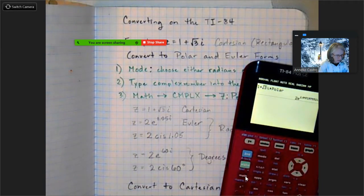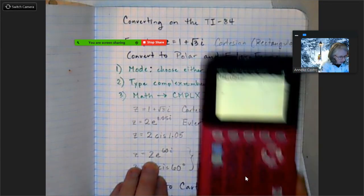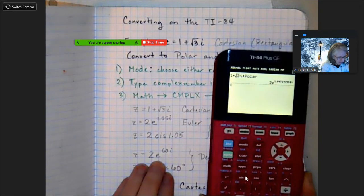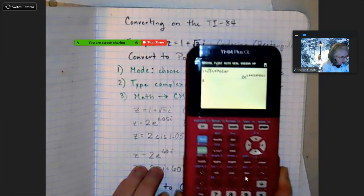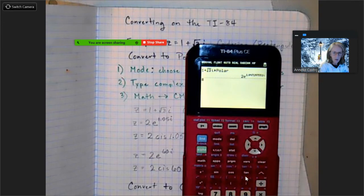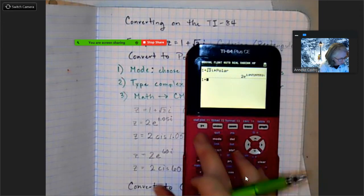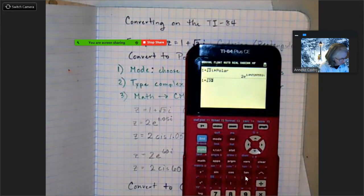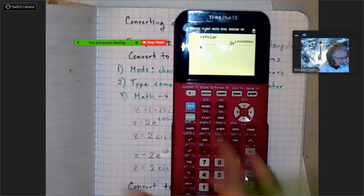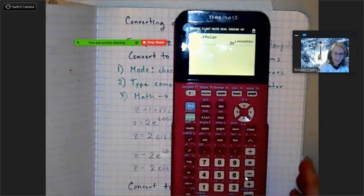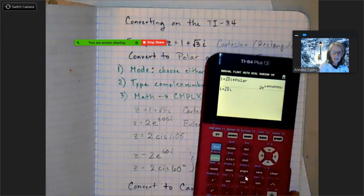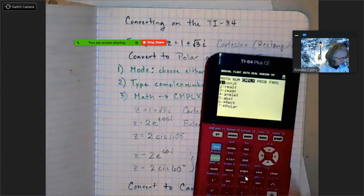What if I wanted the answer in degrees? So here it is, this is what I'm going to get in degrees and I'll show you how. Again I'm going to type in 1 plus square root of 3, get out from underneath my radical, second decimal point to get my i. There it is, so now I'm going to hit Math, complex, option 7 for polar.